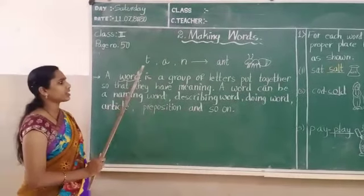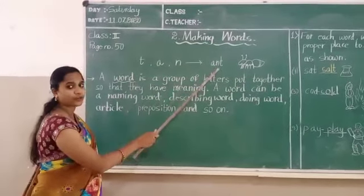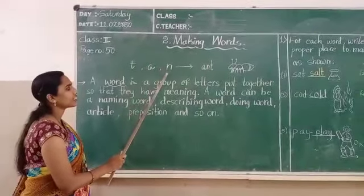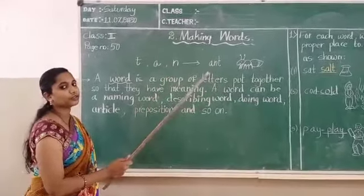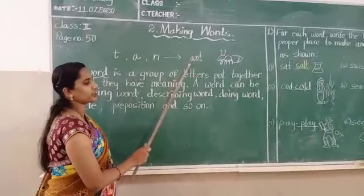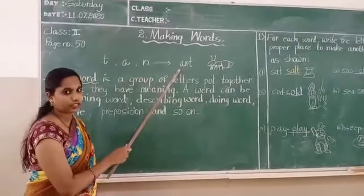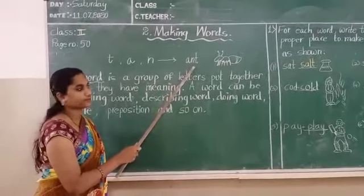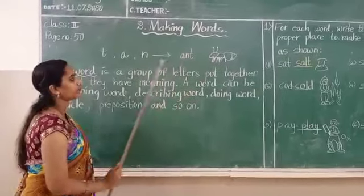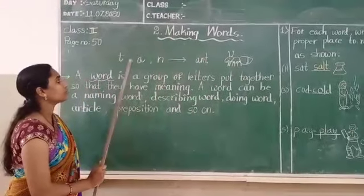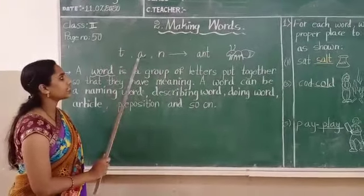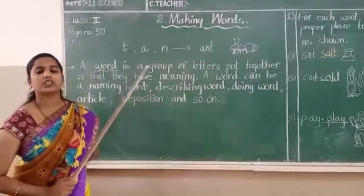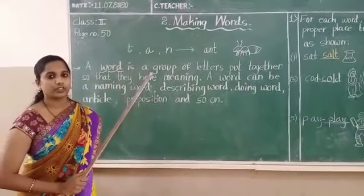Yes children. So now we can make words from letters — A, T, and M letters — by arranging or by grouping them. So this is a meaningful word. By using T, A and M letters, what is this word? Define a word.